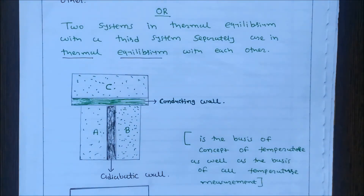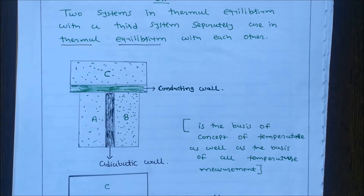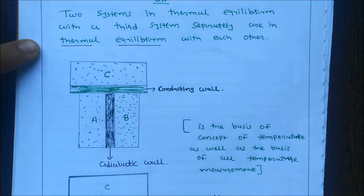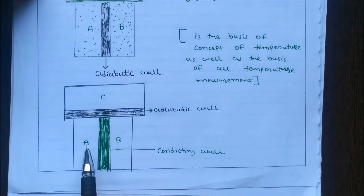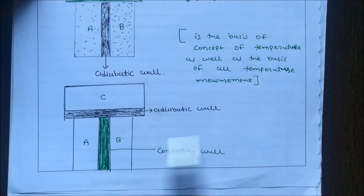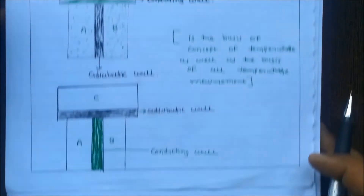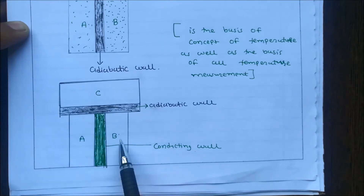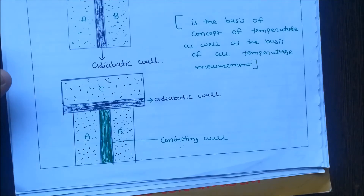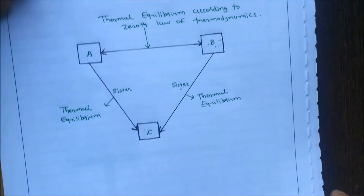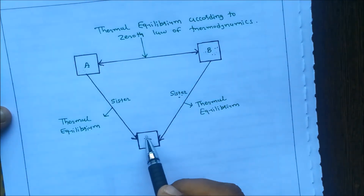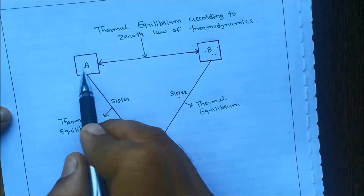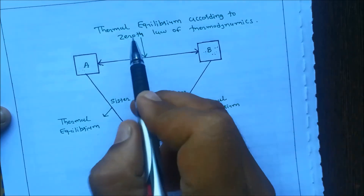Thermal equilibrium means equality of temperature. After thermal equilibrium is reached, suppose the adiabatic wall between A and B is replaced by a conducting wall. In the second figure, the conducting wall replaces the adiabatic wall between A and B, while C is now insulated from A and B via an adiabatic wall. You observe that the states of A and B change no further — they are found to be in thermal equilibrium. This observation forms the basis of zeroth law of thermodynamics: if systems A and B are each in thermal equilibrium with a third system C separately, then A and B are also in thermal equilibrium.